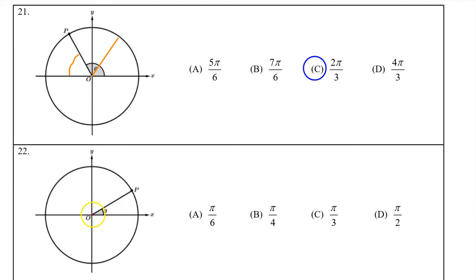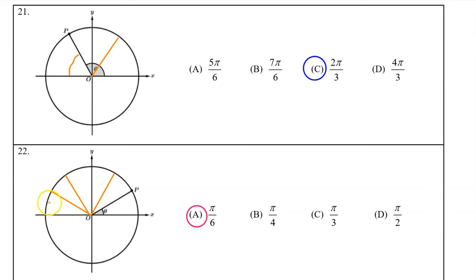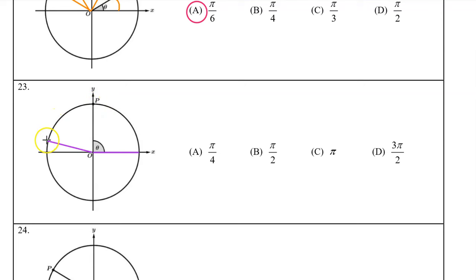Number 22. Right through the middle of quadrant 1 would be pi over 4. So this is smaller than one fourth of pi — this is going to be one sixth of pi. So the answer is A. You can also visualize that you could divide the semicircle up into six equal pieces that equal theta, so theta is one sixth of pi — pi over 6. Number 23: we know that pi is a semicircle, so this angle is half of a semicircle. So this is pi over 2, and the answer is B.